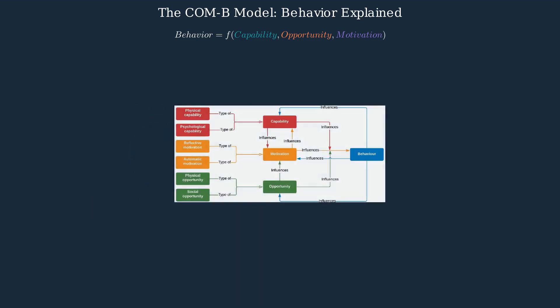The COM-B model shows how these components interact. Each component influences behavior directly, while behavior can also influence capability and motivation in return. Each component is further divided into two subtypes: capability consists of physical and psychological capability; opportunity encompasses physical and social opportunity; and motivation includes reflective and automatic processes.